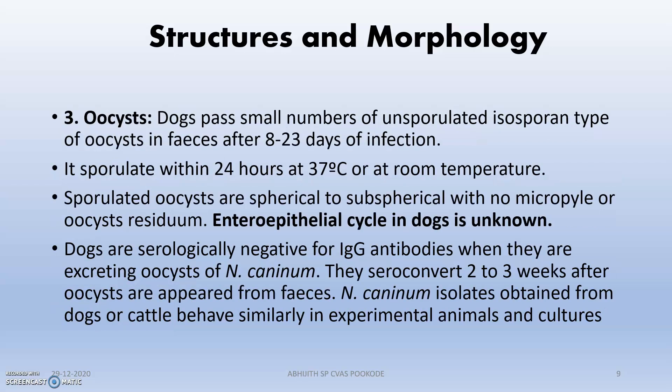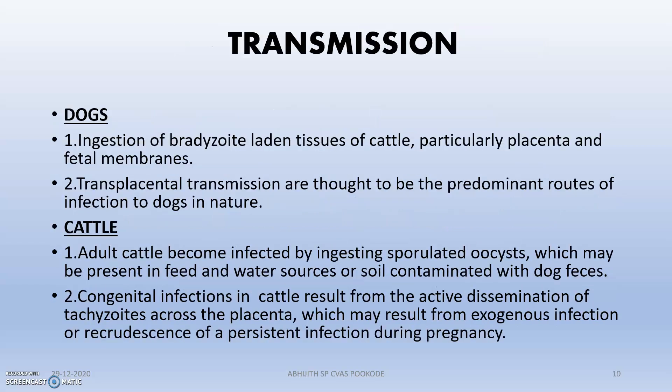The oocysts passed by dogs in Neosporosis are unsporulated isospora-type oocysts, shed by dogs after 8 to 23 days of infection. Transmission in dogs occurs by two methods: ingestion of bradyzoite-laden tissues of cattle, particularly the placenta and fetal membranes, and transplacental transmission, which is thought to be the predominant route in dogs.